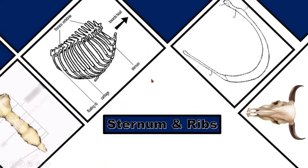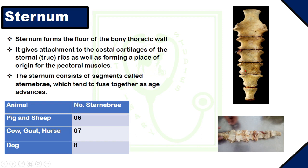Now, sternum and ribs. The sternum is the bone which forms the floor of the bony thoracic cavity. It gives attachment to the costal cartilage of the sternal ribs as well as forming a place of origin of the costal muscle. Sternum consists of segments called sternebrae which tend to fuse together as age advances. The number of sternebrae varies with the species: in pig and sheep there are six sternebrae, in cow, goat, and horse there are seven, and in dog there are eight sternebrae.